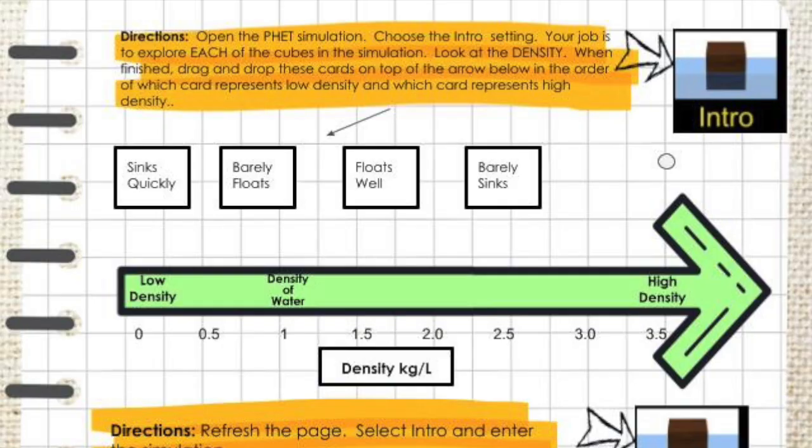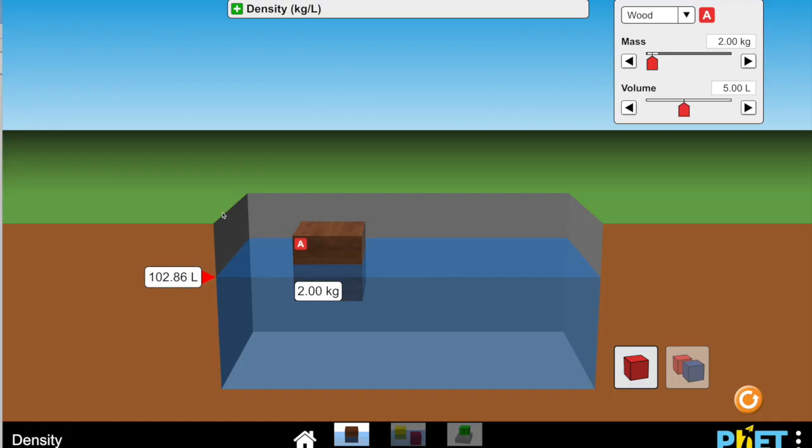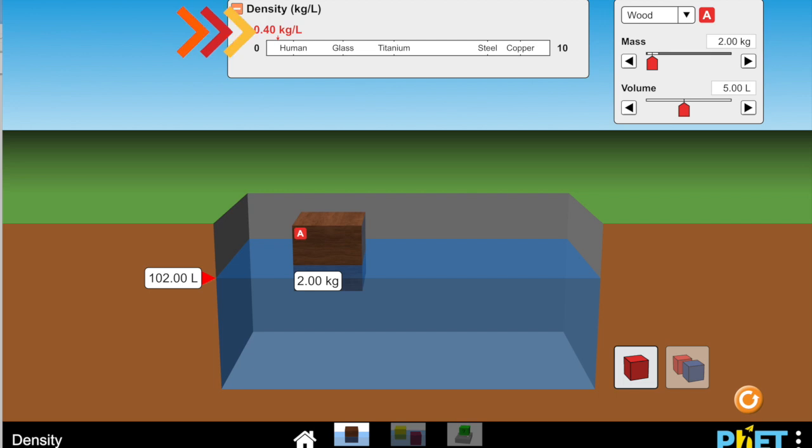For this next section, we're going to explore the intro section on the PhET simulation so that we can sort these cards by dragging and dropping them onto this green arrow based on density. When you open up the simulator, click this plus sign to expand this panel. This will reveal the density of several different items.